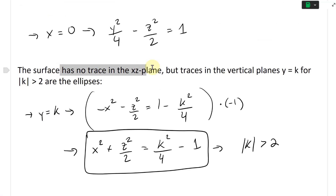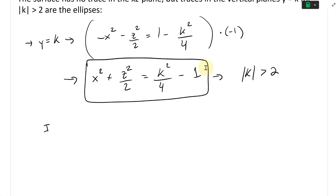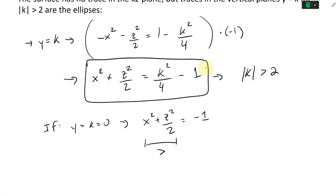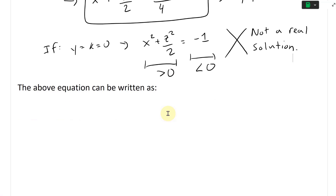There's no trace in the XZ plane because setting y = 0 gives x² + z²/2 = -1. The left side is always positive or zero, the right side is negative, so there's no real solution — you'd need imaginary numbers, so no real trace exists in that plane.